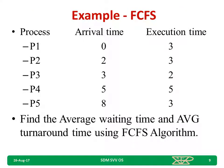Let us take one example to understand the working. Processes P1, P2, P3, P4, P5 have arrival times 0, 2, 3, 5, 8 milliseconds and execution (burst) times 3, 3, 2, 5, 3 milliseconds respectively. What is asked is the average waiting time and average turnaround time using the FCFS algorithm.